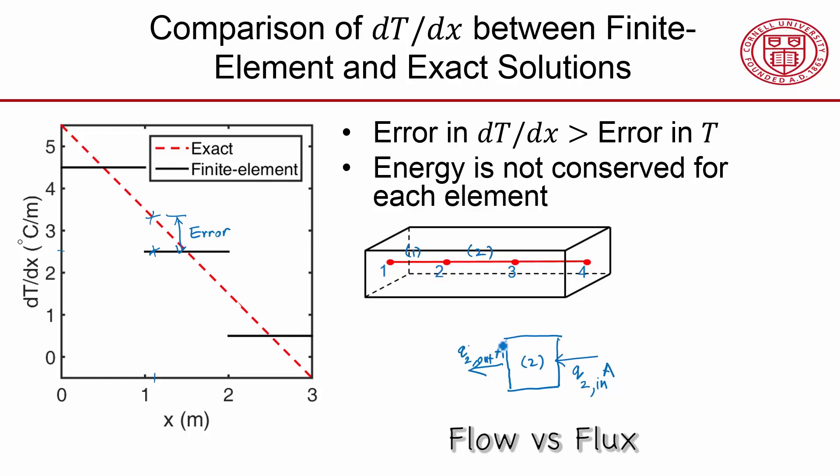And correspondingly, this would be the heat flow going out, and if I multiply that by the area, I will get the heat flow going out. So that's the heat flux, and multiplied by the area is the heat flow. And then I also have the heat being generated in that element, that's Q times the volume, area times delta x.